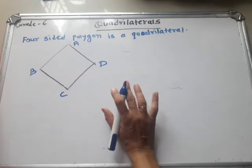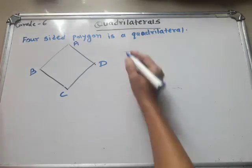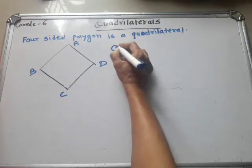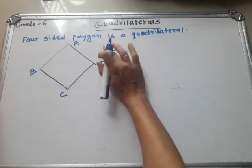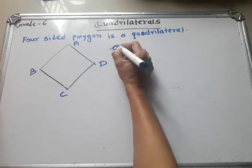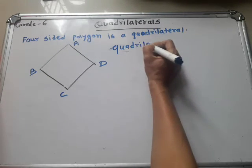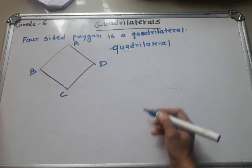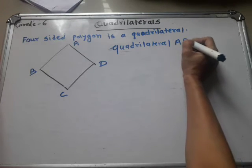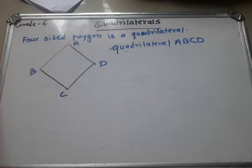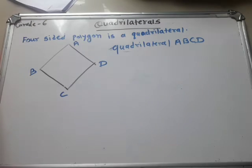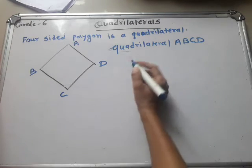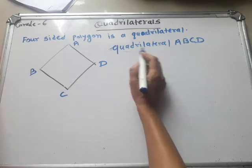Because the shape can be any shape — any different shape is possible. So you write directly: quadrilateral ABCD. Here there is no symbol; we write the name directly: quadrilateral ABCD.